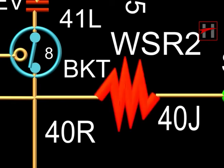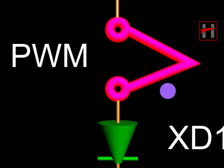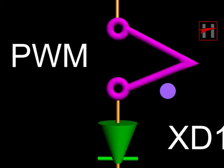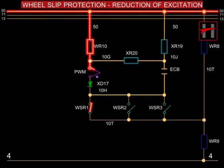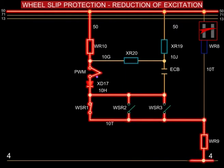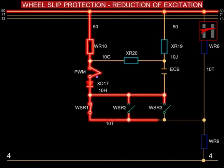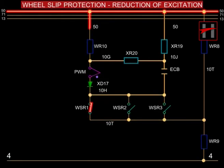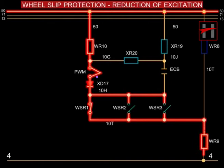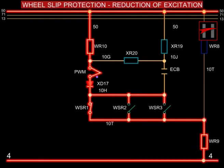Whenever any WSR operates, the interlocks of that WSR complete the circuit of wheel slip windings of the PWM reactor, which reduces the pulse width of the EFT transistor and thereby the excitation level. The current from cable number 50 flows to WR10, PWM, XD17, the concerned WSR interlock, cable 10T, WR9, and completes the path with cable number 4.